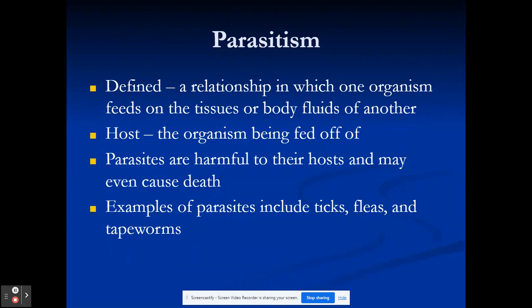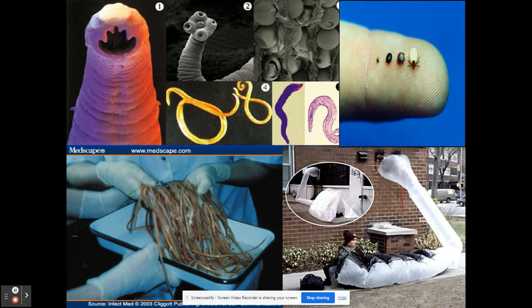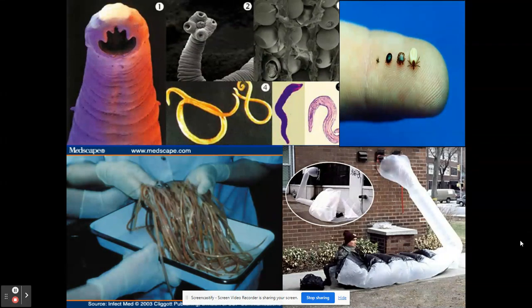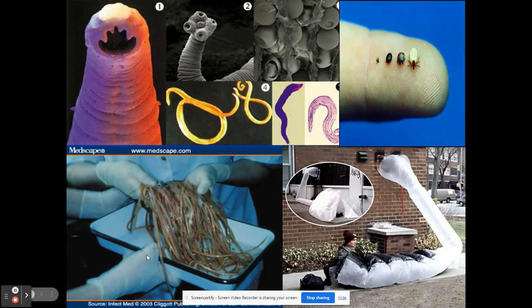Some examples would be ticks, fleas, tapeworms, ringworms — anything that gets nutrients off of other organisms and leaves them in a negative spot. Right here we see some images of that: hookworms, ringworms, ticks in the top right corner, and in the bottom left corner an image of tapeworms from someone's digestive tract. And then right here is the idea of parasitism in a situation where they are stealing resources from a business.